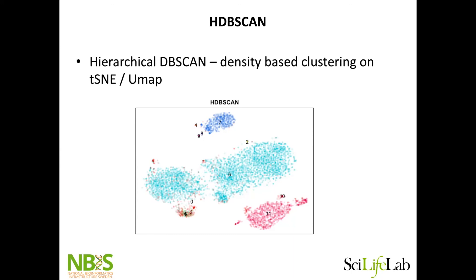I still believe — though I don't have any proof for it — that the SNN graph better represents all the diversity you have in your data compared to the UMAP compressed down to 2 dimensions.